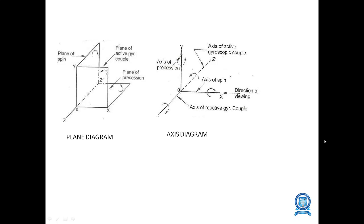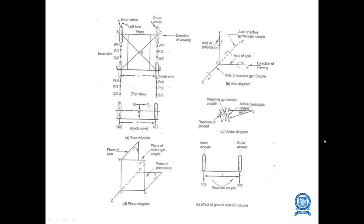The plane diagram and the axis diagram for the reactive gyroscopic couple is shown along the x-axis, y-axis, and z-axis — indicating the direction of weaving, angle of spin, axis of reactive gyroscopic couple, axis of precession, and axis of active gyroscopic couple.